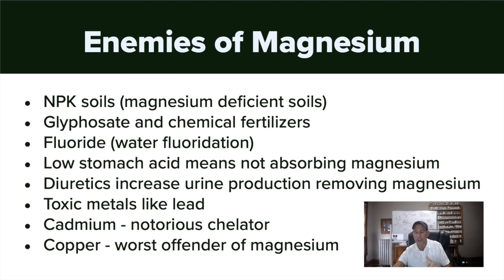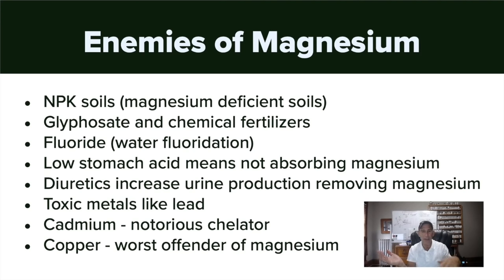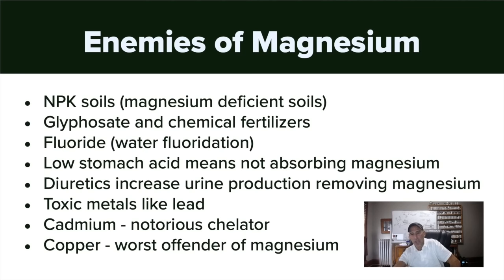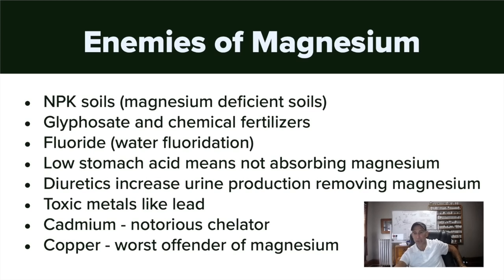To understand magnesium, you must understand the anti-nutrient concept. Think of a bank account: if you have $100 but don't know your expenses and debt, you don't know your true status. If your total debt is $101 and you only have $100 in the bank, you're negative — your energy currency is in deficit. This is why we must understand the enemies of magnesium to move the needle on potassium, get out of adrenal burnout, and address sympathetic dominant patterns.